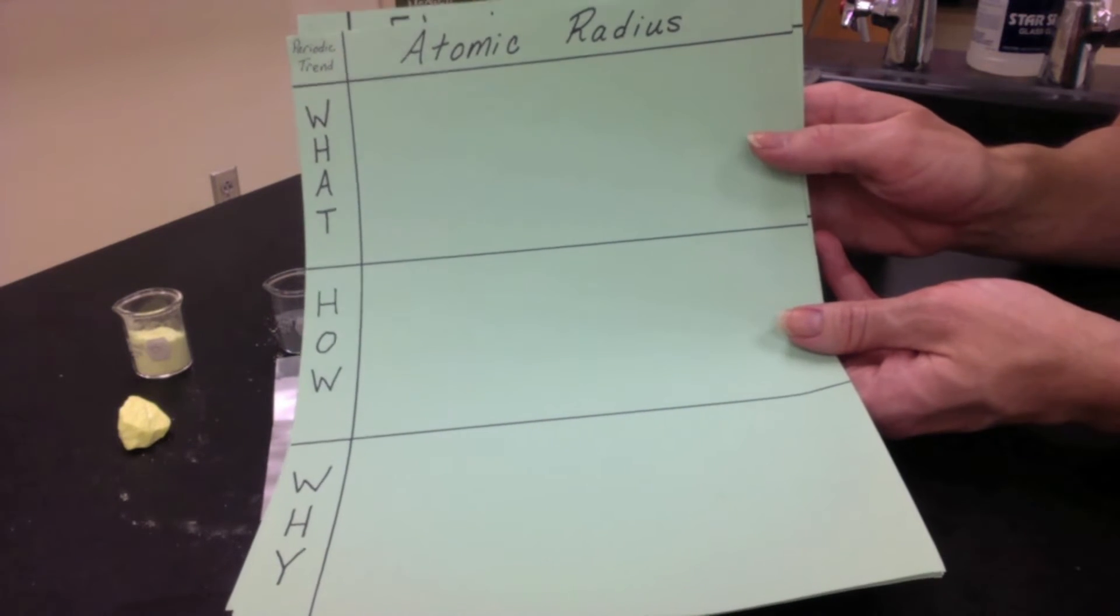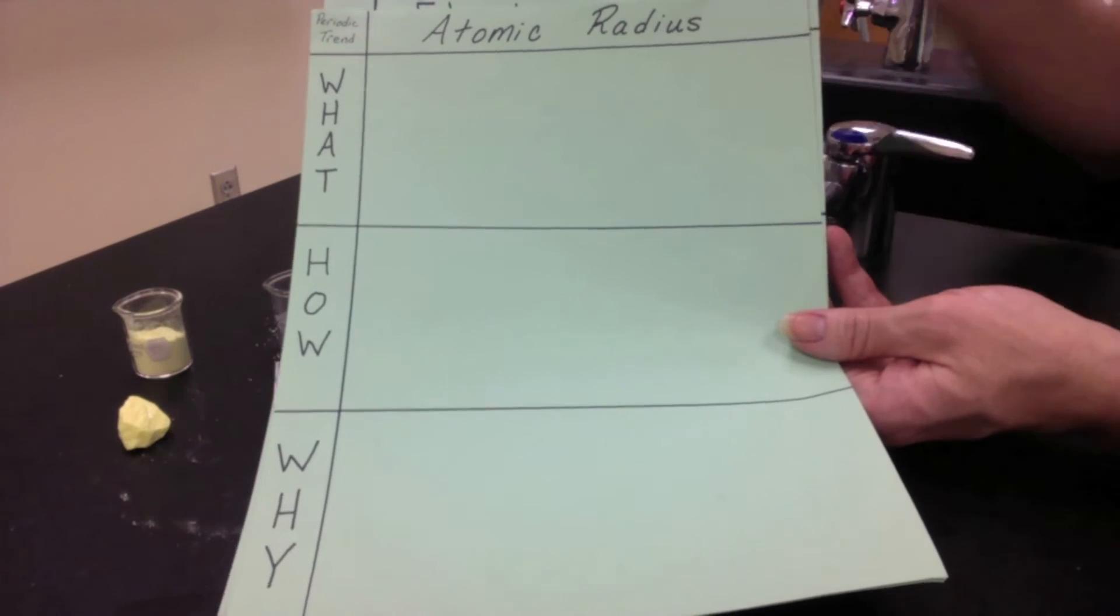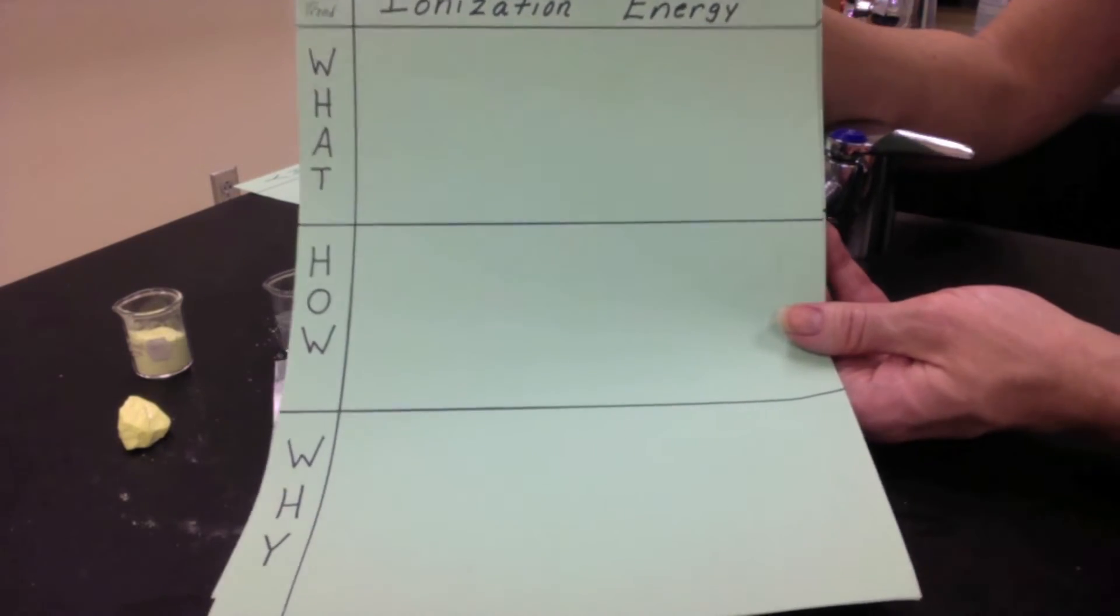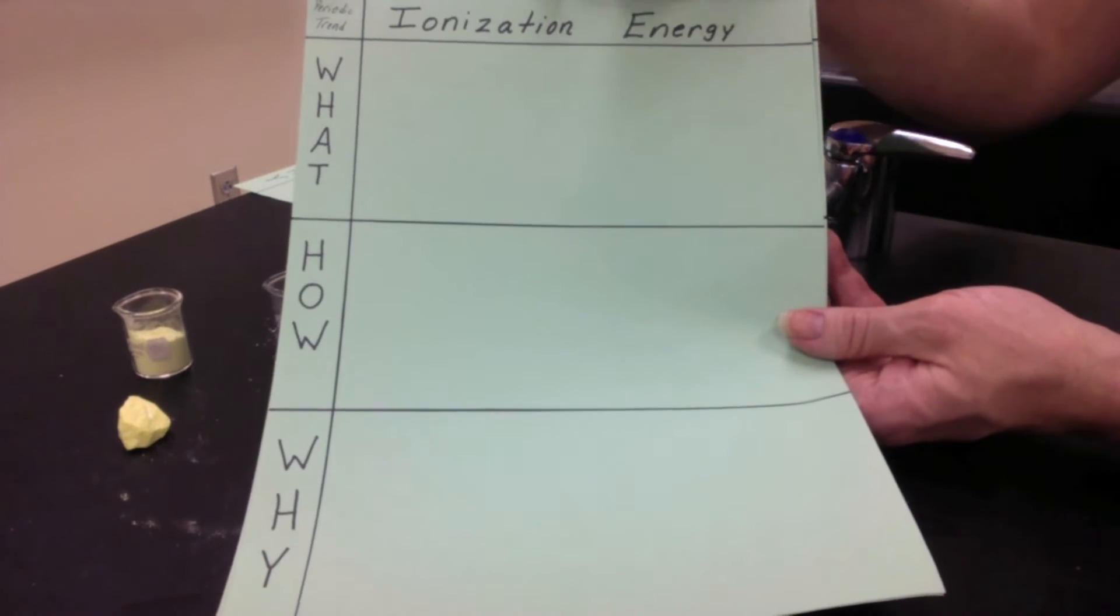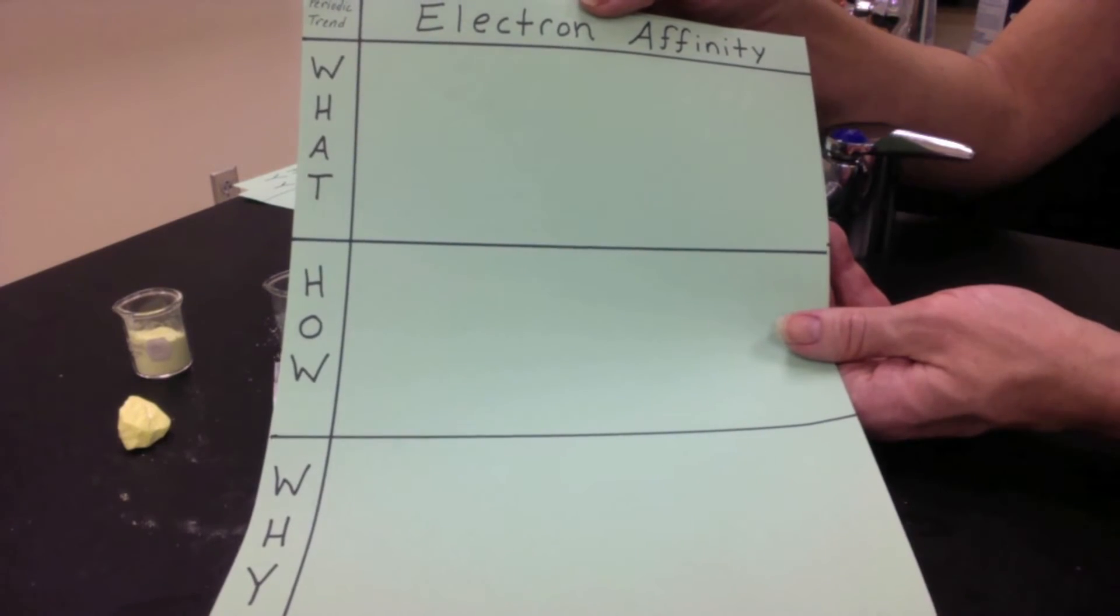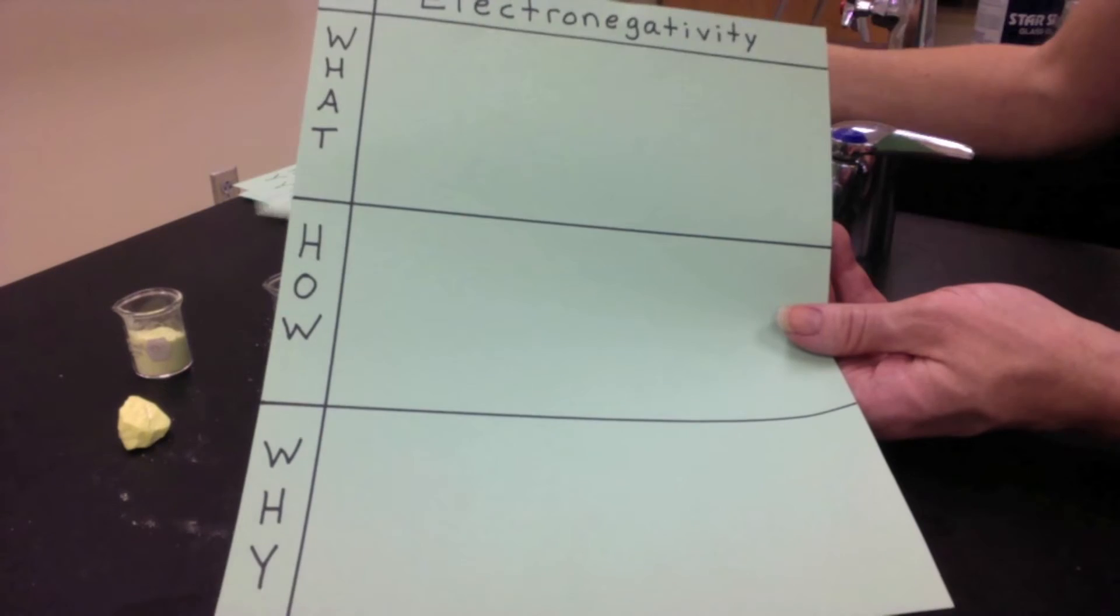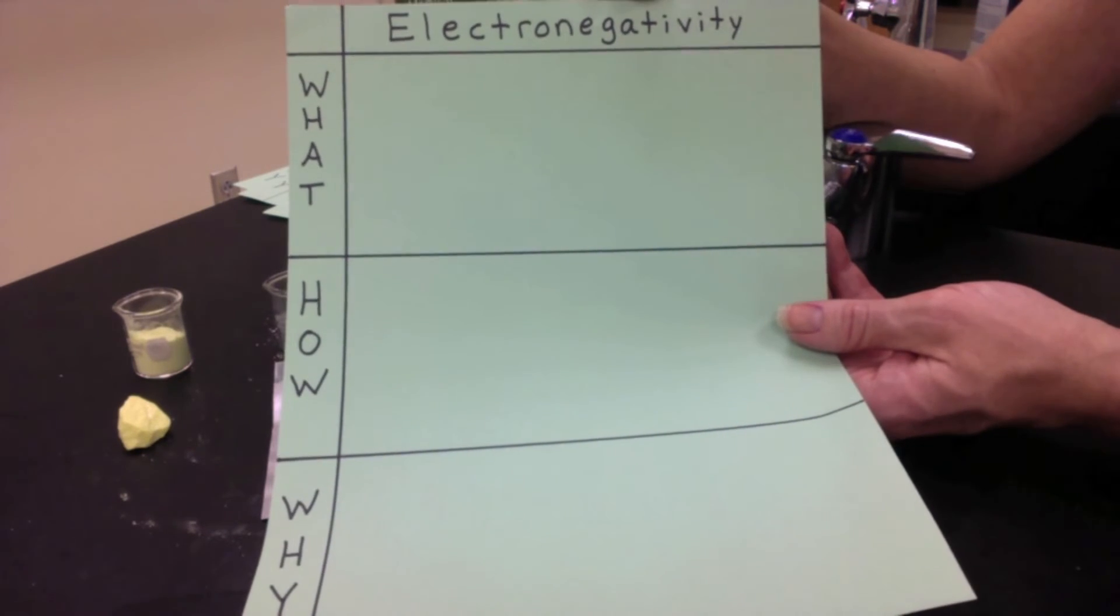These will go on the back side of your periodic table. Atomic radius will cover what, how, and why that affects electrons being exchanged. Ionization energy: what, how, and why that affects an atom gaining or losing an electron. And electron affinity is the third periodic trend that will help explain ionic bonding. There is a fourth periodic trend, electronegativity, but we won't need that until we cover covalent bonding.